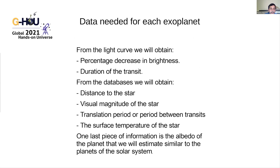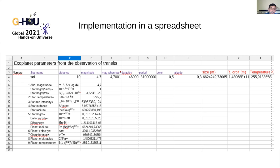From the light curve, we obtain the percentage decrease in brightness and the duration of the transit. From the internet we take the distance to the star, the visual magnitude of the star, the transit period between transits, and the surface temperature of the star. We also need to estimate the albedo — the reflection of the planet — which we set at 40%, similar to planets in our solar system. All calculations are then implemented in a spreadsheet.